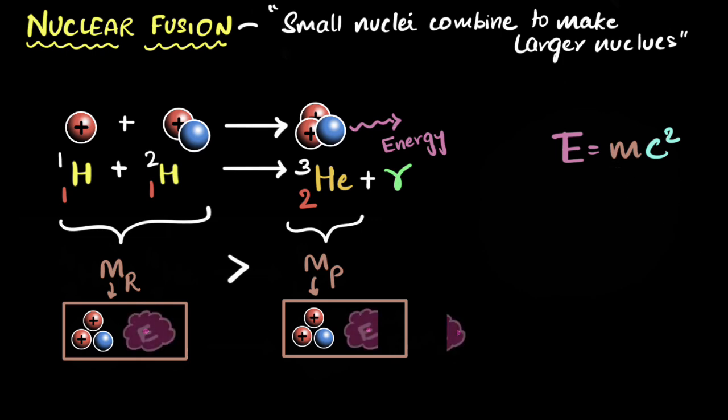E equals MC squared is universal. It's applied everywhere. It's just that it becomes more prominent when it comes to nuclear reactions. And therefore, when it comes to nuclear reactions, we talk about it. Secondly, I used to wonder, light has energy, but it does not have any mass. Light has zero mass. So isn't the equation violated?